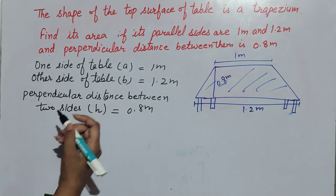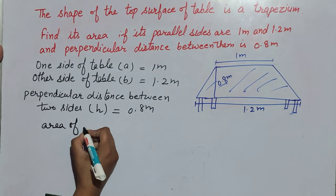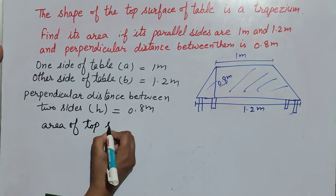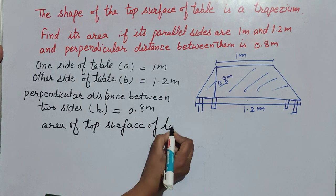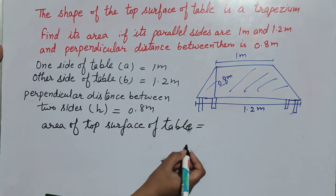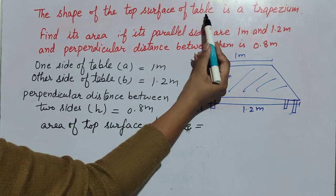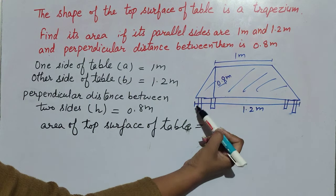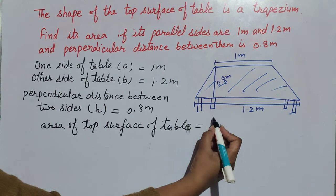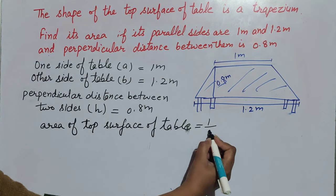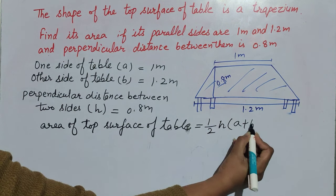The top surface of the table is like a trapezium, so the area of the top surface of the table is equal to the area of a trapezium. We use the formula: area of trapezium is equal to 1/2 into h into (a + b).